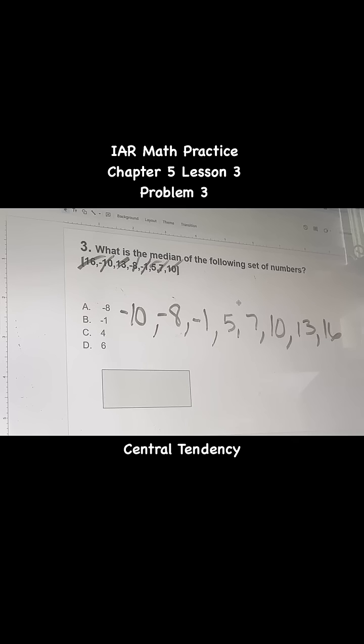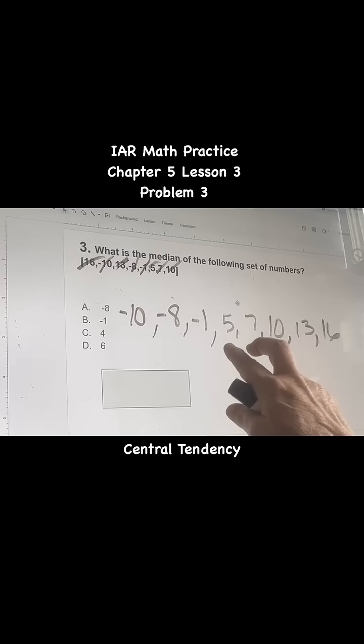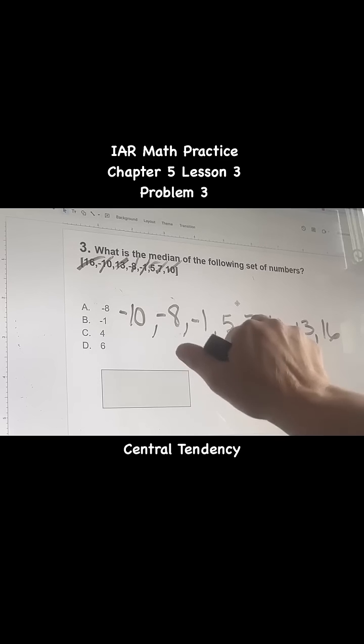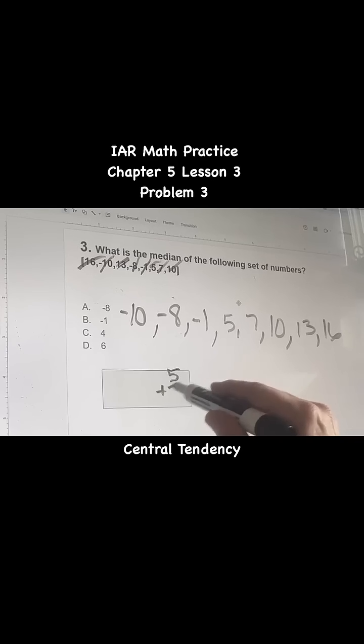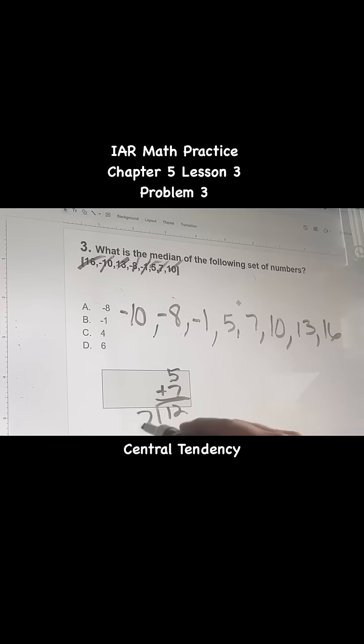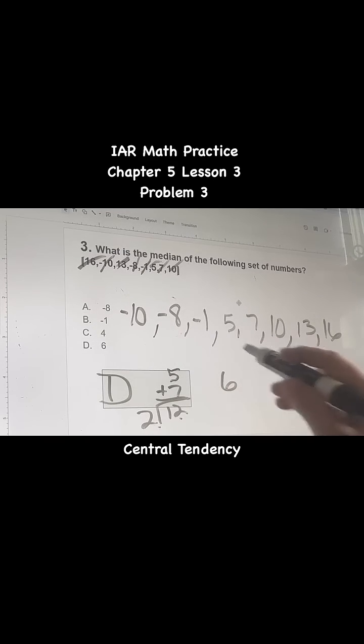So if you have an even number, you take the two middle numbers, which would be 5 and 7, because it would be 3 on this side, 3 on this side. You add them together, 5 plus 7 is 12, and divide by 2. Okay, so your answer would be 6D.